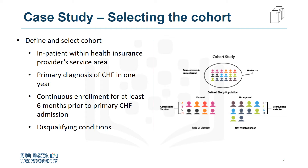First, a patient needed to be admitted as inpatient within the provider service area, so they'd have access to the necessary information. Second, they focused on patients with a primary diagnosis of congestive heart failure during one full year. Third, a patient must have had continuous enrollment for at least six months prior to the primary admission for congestive heart failure, so that a complete medical history could be compiled.